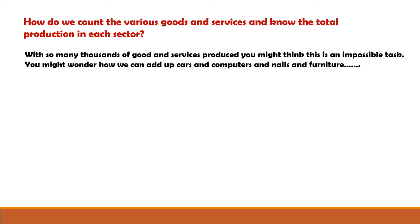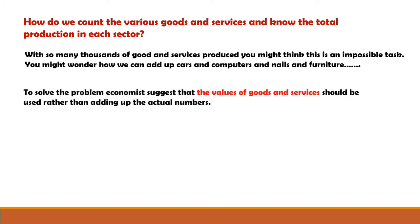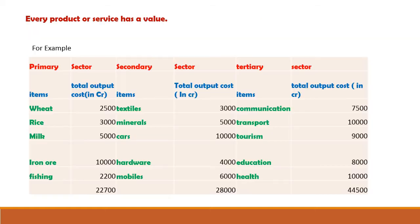You might wonder how we can add up cars and computers, nails and furniture. To solve the problem, economists suggested that the value — in terms of rupees in case of India — of goods and services should be used rather than adding up the actual numbers. Here I have taken a simple example to make things clear. Every product or service has a value. I have taken five items from the primary sector — suppose that in the primary sector only these five items are produced.